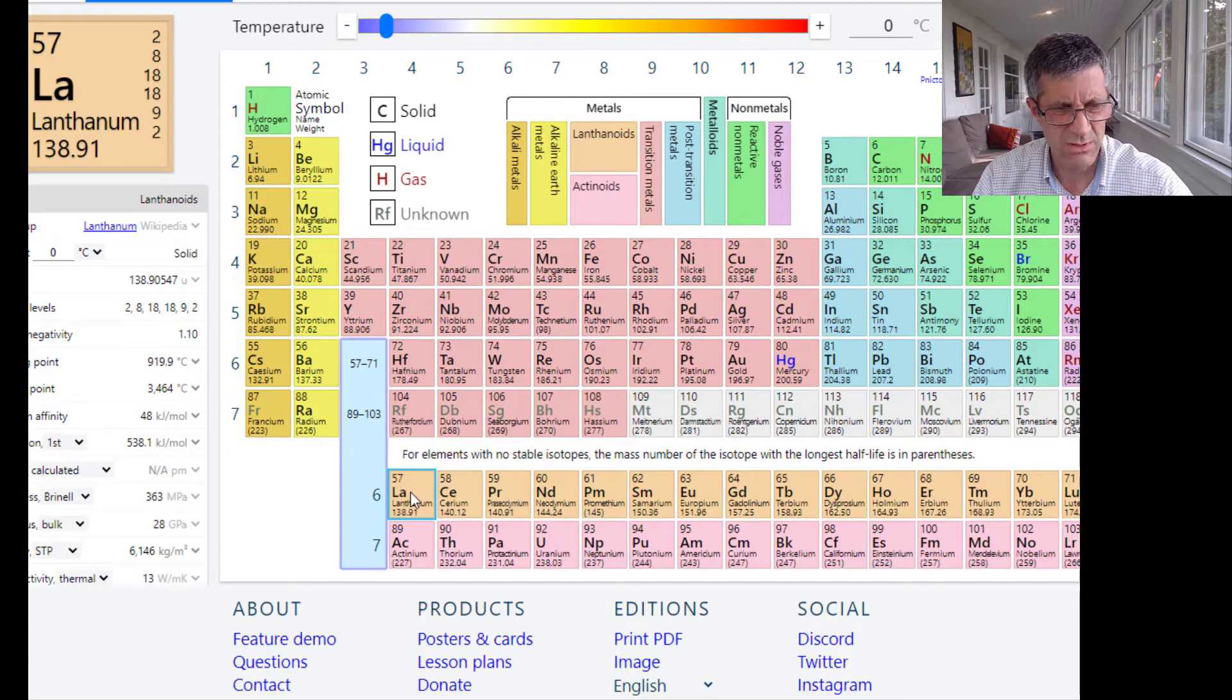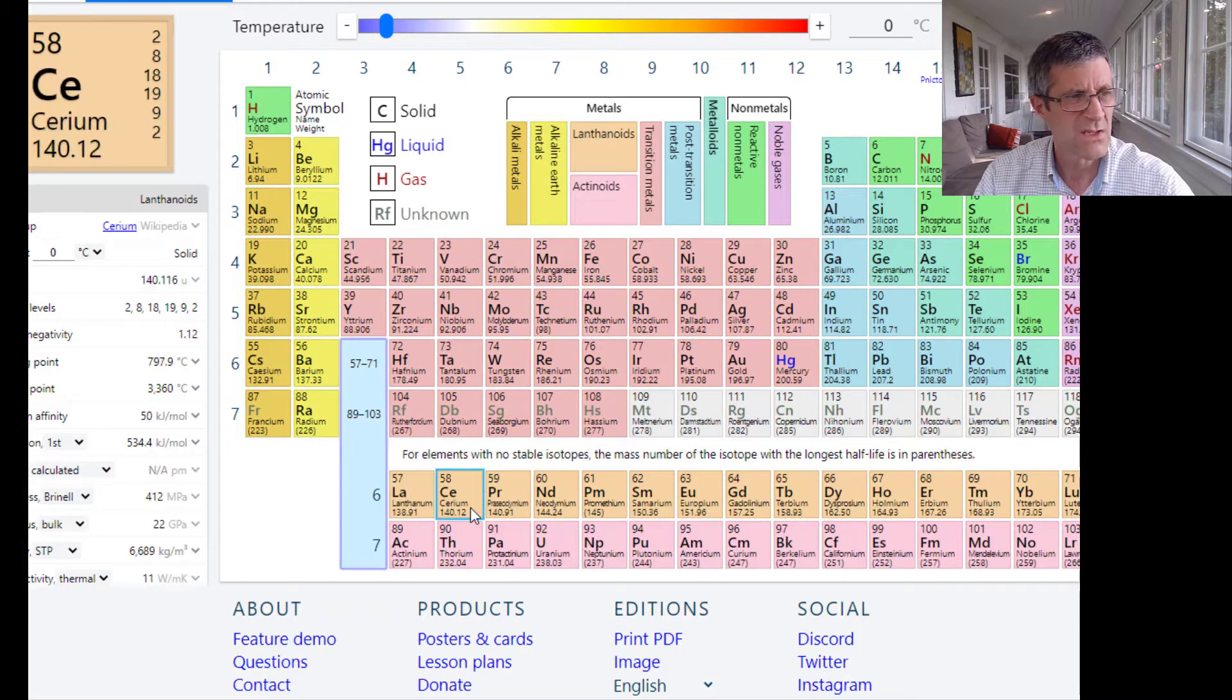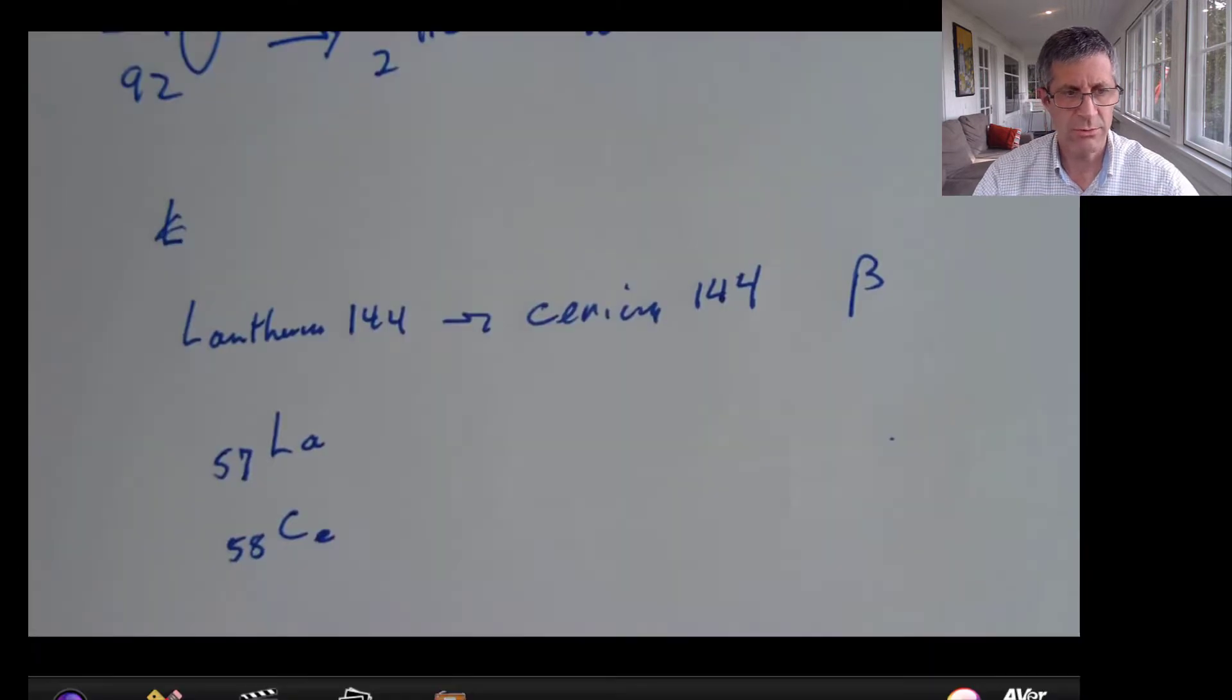This is going to turn into cerium. Cerium, so that's probably just one away. Yep, there it is. Cerium has 58 and that's CE. CE and it has 58 protons in this nucleus. Okay, let's see if we can draw a reaction from this.